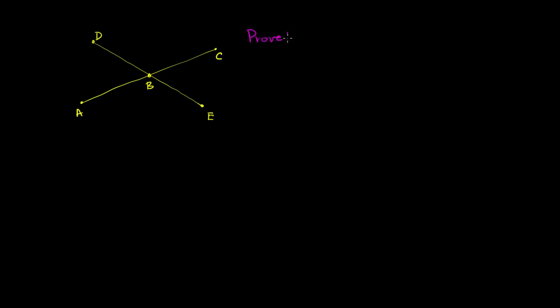What I want to do is prove that angle CBE is always going to be equal to its vertical angle, which is angle DBA. If I can prove that, then I prove that vertical angles are always going to be equal because this is just a generalizable case. So what I want to prove here is angle CBE is equal to angle DBA.